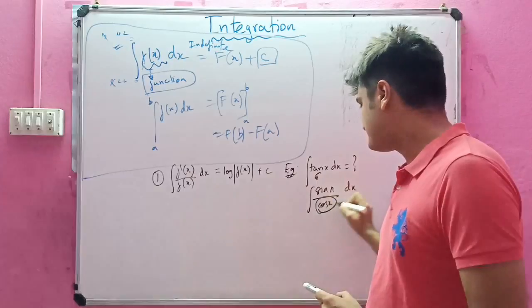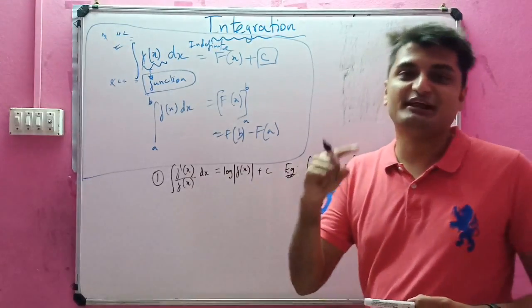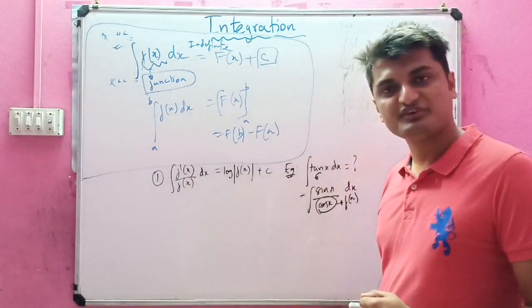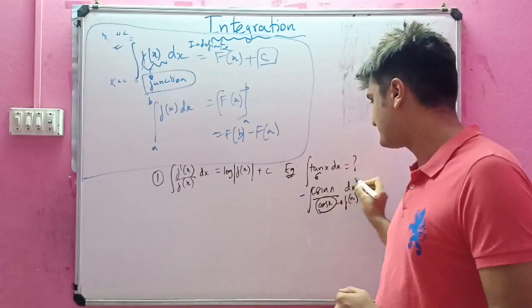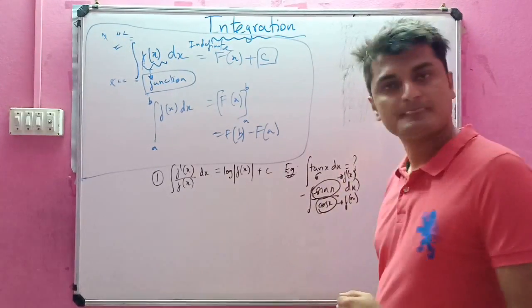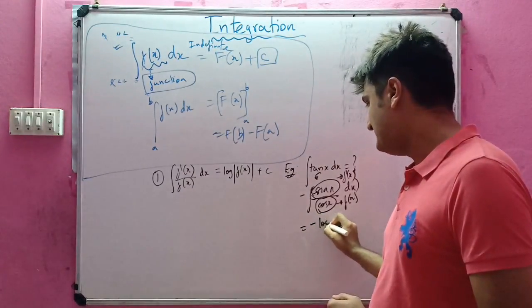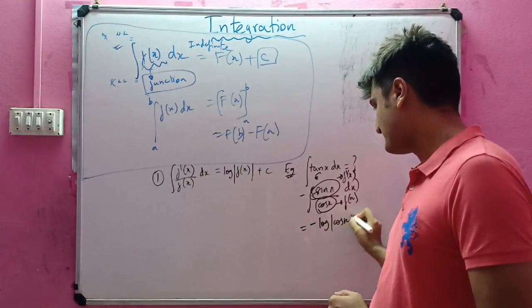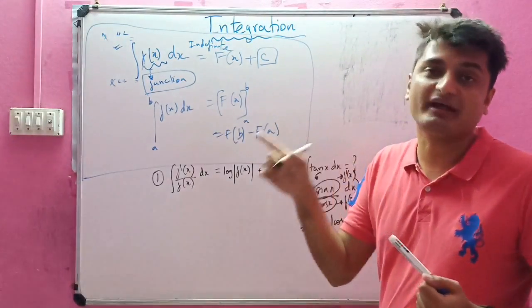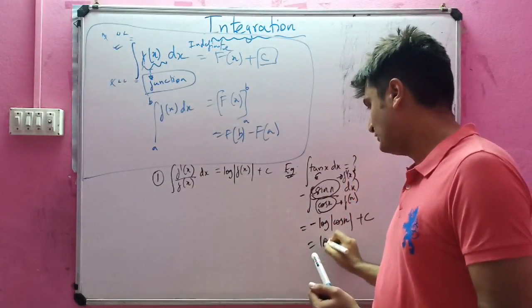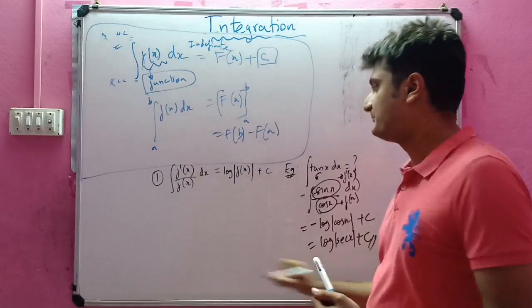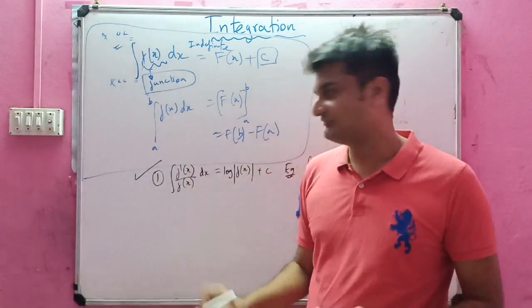If this is my function, what is the derivative of cos x? The derivative of cos x is minus sin x. I will give a negative sign outside the bracket and inside the bracket. This whole term will be f dash of x. I can directly write this as minus log mod cos x plus c. Or the negative goes inside because we know n log a is log a power n, so this will be log of secant x plus c. This is the first basic rule which we have.